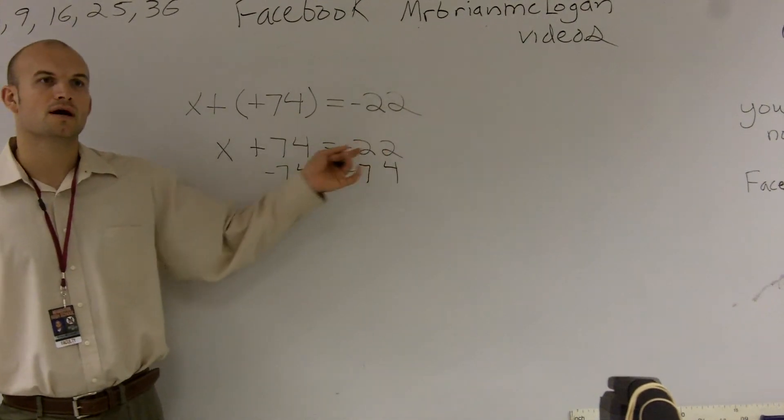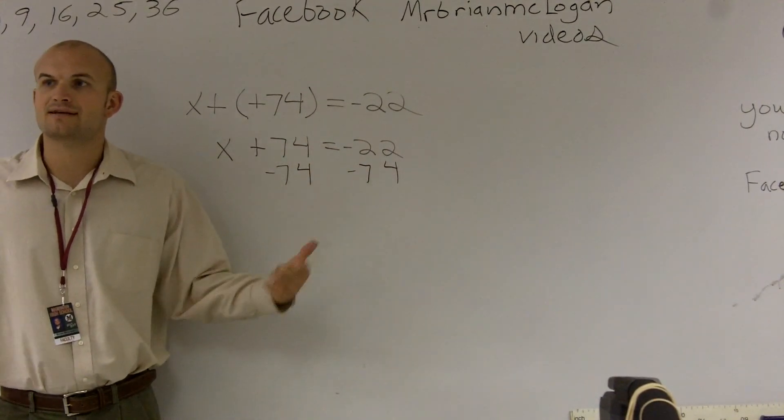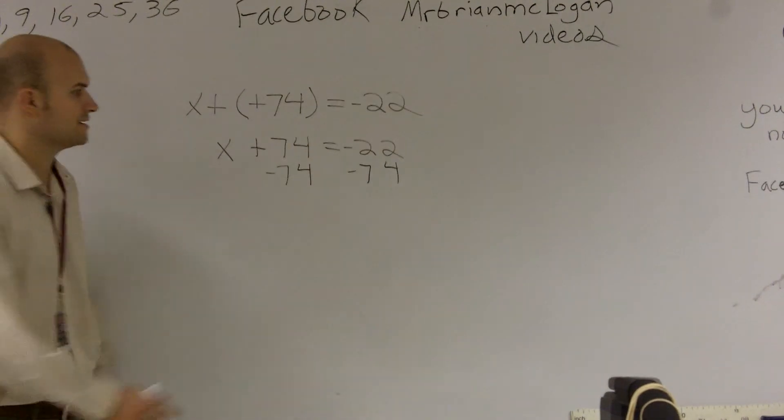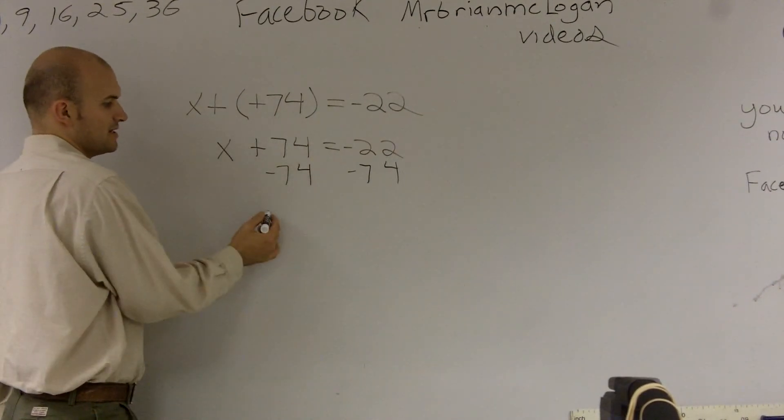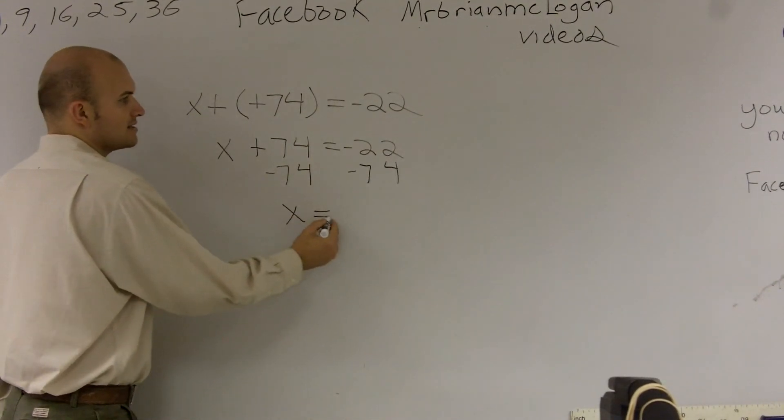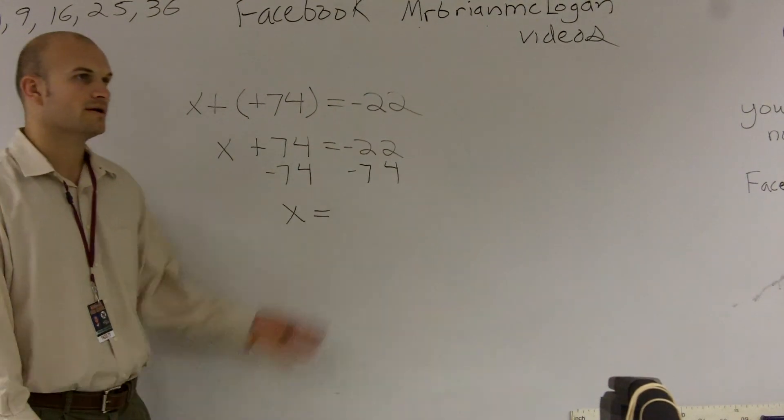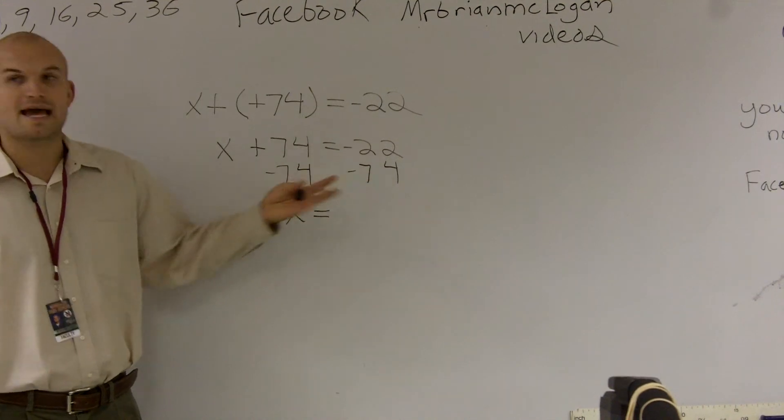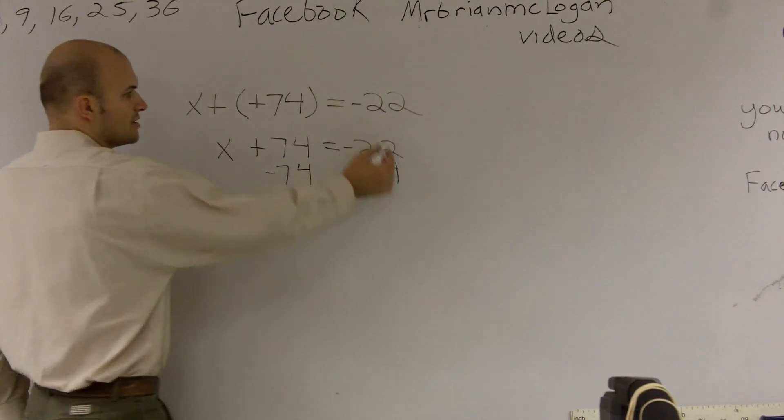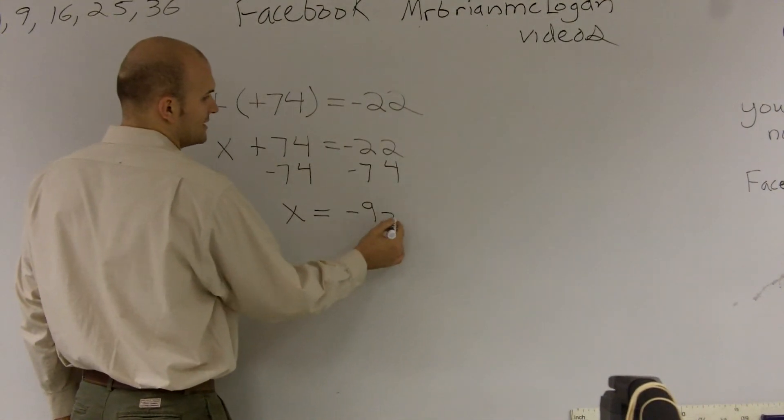So negative 22 minus a negative number, it's kind of like adding them and knowing the answer's going to be negative. So these cancel out to become 0. So I'm just left with x equals negative 22 minus 74. Remember, they're both negative. You can just add them up, and you know your answer's going to be negative. So that would be a negative 96.